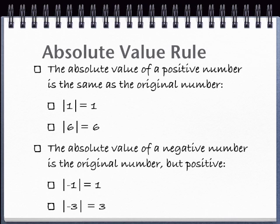The absolute value of a negative number is the same as the original number, but positive. So, the absolute value of negative 1 is positive 1, the absolute value of negative 3 is positive 3, and so on.